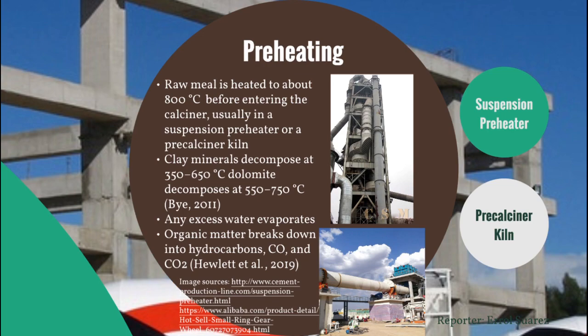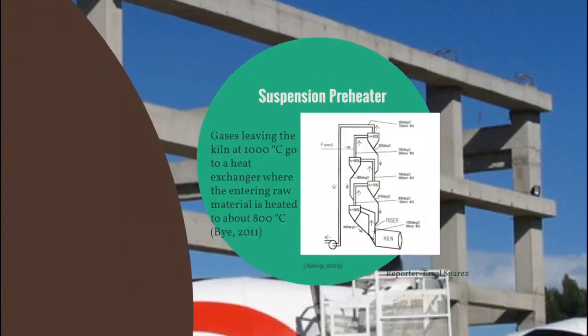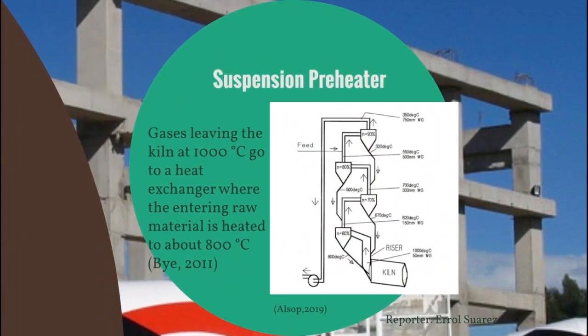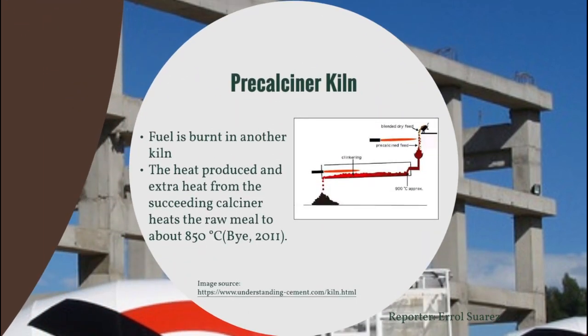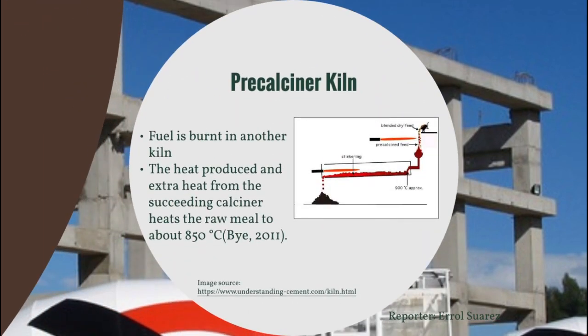Preheating is usually done in either a suspension preheater or a pre-calciner kiln. A suspension preheater functions like a tower of successive heat exchangers, transferring heat from gases leaving the kiln at 1000 degrees Celsius to the entering raw meal, regulated so that the raw meal is heated to about 800 degrees Celsius. A pre-calciner kiln is a second separate kiln where fuel is burnt, and the heat produced as well as the extra heat of the succeeding calciner raise the temperature of the raw meal to about 850 degrees Celsius.